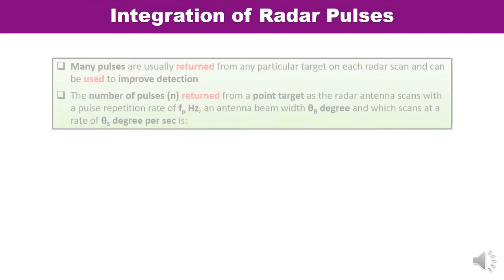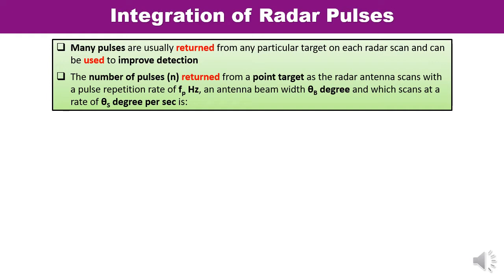Let us talk about what integration is and why it is required — why we say that integration is used to improve the detection capability. In the case of radar, the return echo reflected from the target is received by the radar, and depending upon the strength of the echo signal the presence of a target is identified. Each target may return multiple pulses. So multiple pulses are usually returned from a particular target on each radar scan, and these pulses can be used to improve the detection capability of the radar. That is why integration of radar pulses improves the detection capability of the radar.